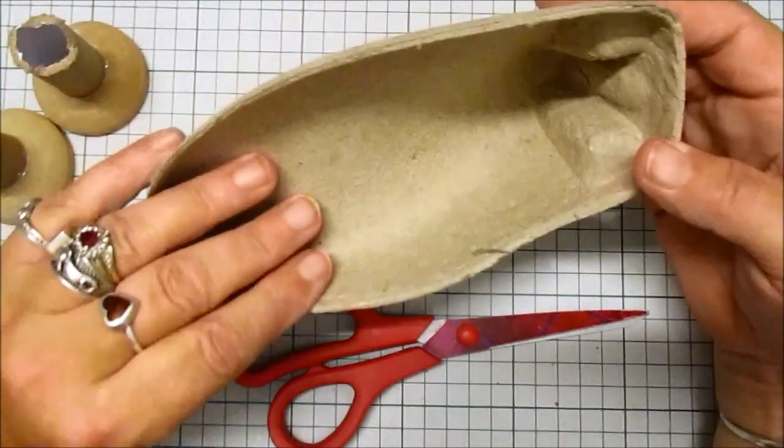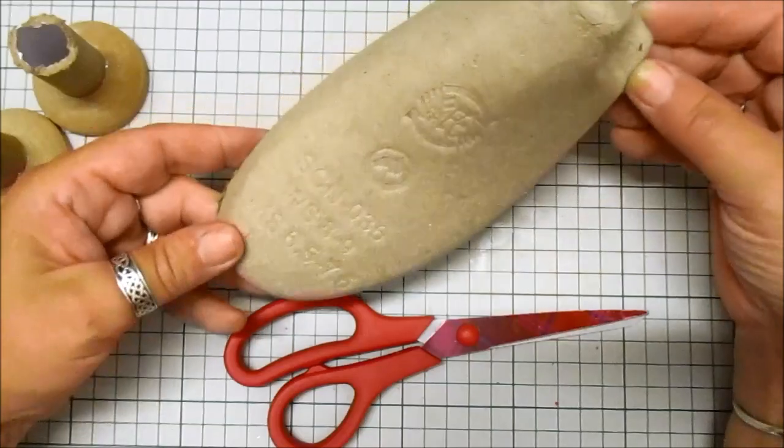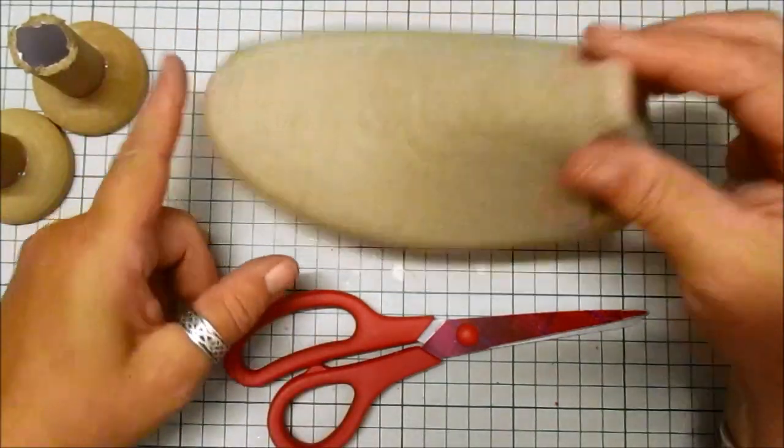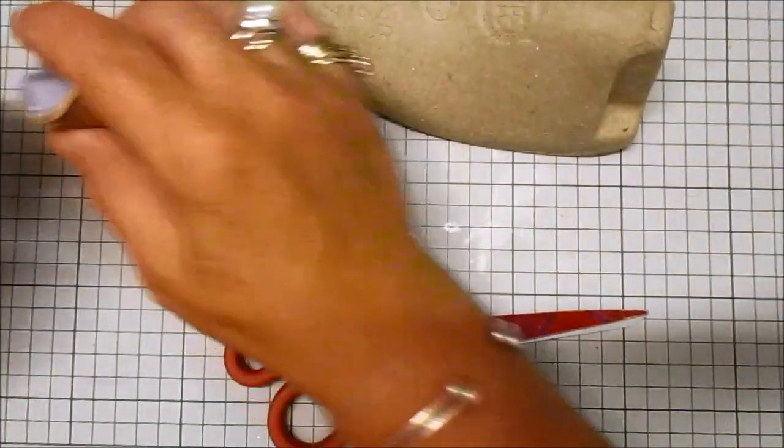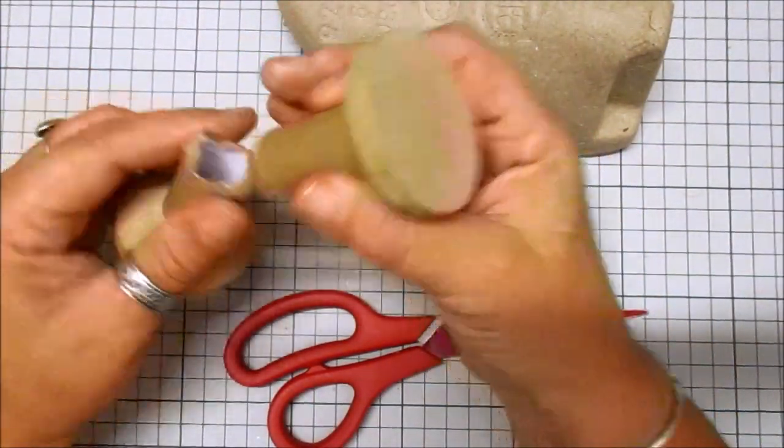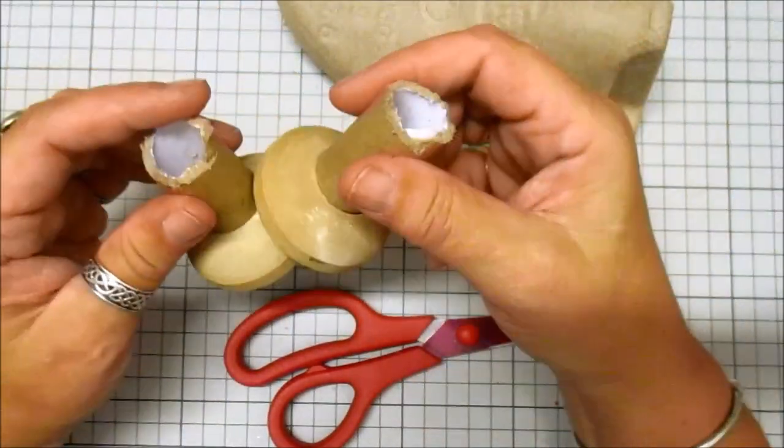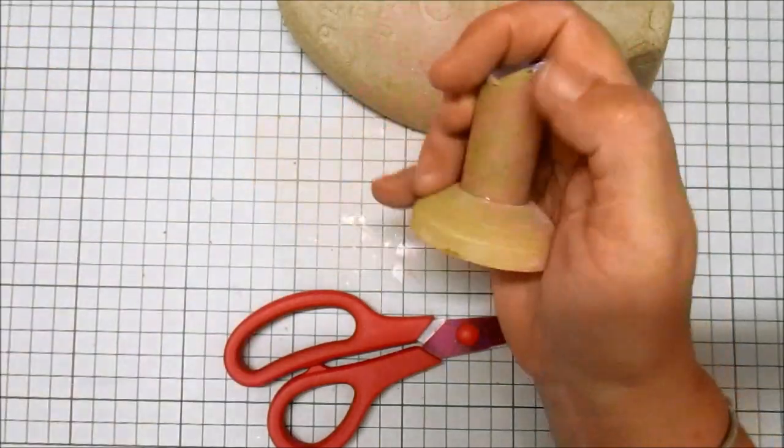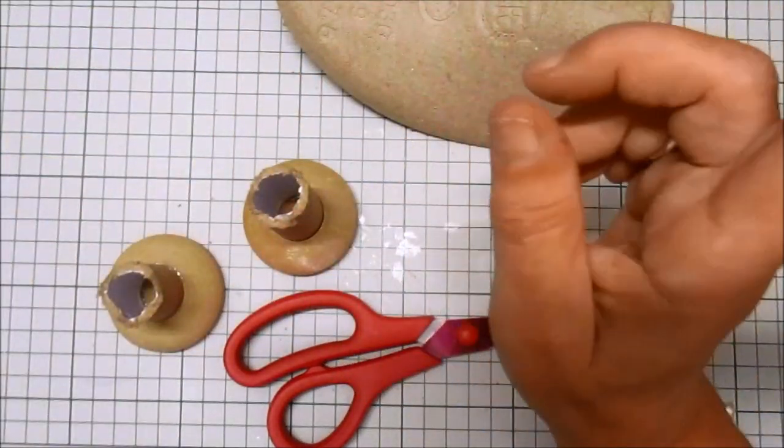I don't know how many of you come across these, but sometimes when you get shoes you end up with the inserts inside. What I've done here is, the ends were wooden but the middles were cardboard, so I've cut it in half.